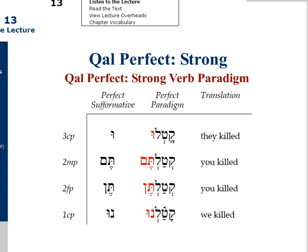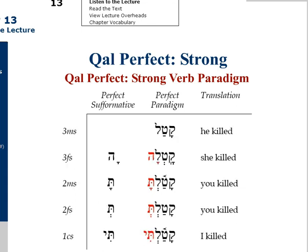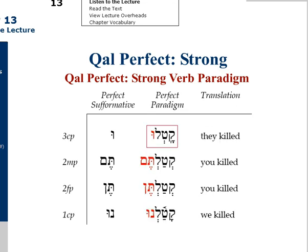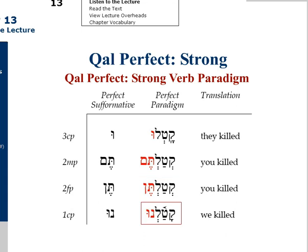One more time, I'd like to pronounce the entire paradigm. Third masculine singular: katal. Third feminine singular: katala. Second masculine singular: katalt. Second feminine singular: katalt. First common singular: katalti. Third common plural: katalu. Second masculine plural: kataltem. Second feminine plural: katalten. And the first common plural form is pronounced katalnu.